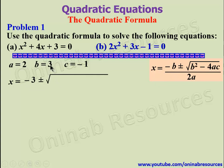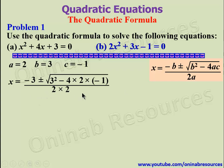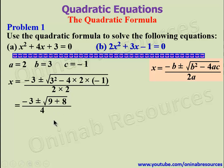Simplifying inside the square root: 3 squared is 9, and since negative times negative gives positive, 4 times 2 times 1 gives 8. So we have negative 3 plus or minus the square root of 9 plus 8, which is the square root of 17, all over 4. If we need to leave our answer in surd form, we stop here as it cannot be simplified further.